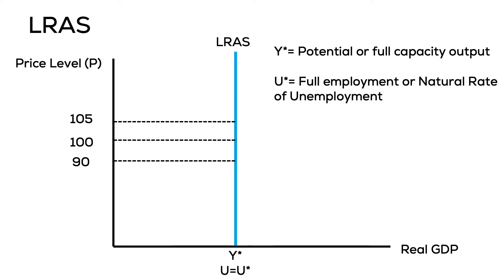Y* becomes an important variable. Y* is what we refer to as full capacity output, sometimes referred to as potential output. It is the level of output associated with a healthy economy operating at capacity. At Y*, our unemployment level will equal the natural rate of unemployment — the 5% we have previously discussed. At Y*, the only unemployment in the economy is frictional and structural unemployment.